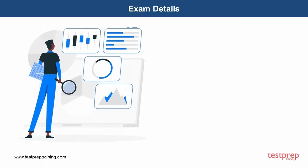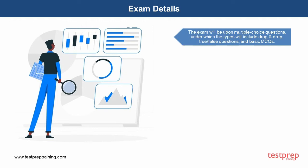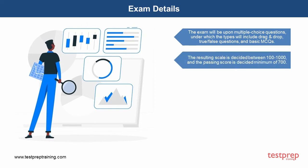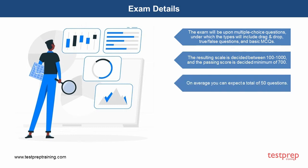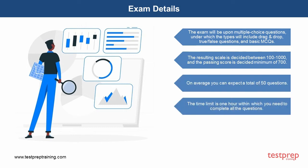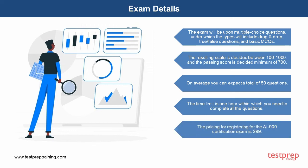Exam details. The exam will be based on multiple choice questions, under which the types will include drag and drop, true or false questions, and basic MCQs. The resulting scale is decided between 100 to 1000, and the passing score is a minimum of 700. On average you can expect a total of 50 questions. The time limit is one hour within which you need to complete all the questions. The pricing for registering for the AI-900 certification exam is $99.